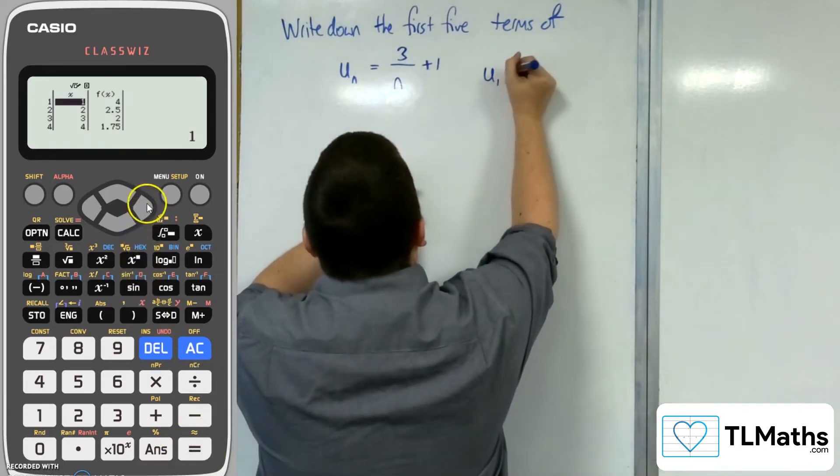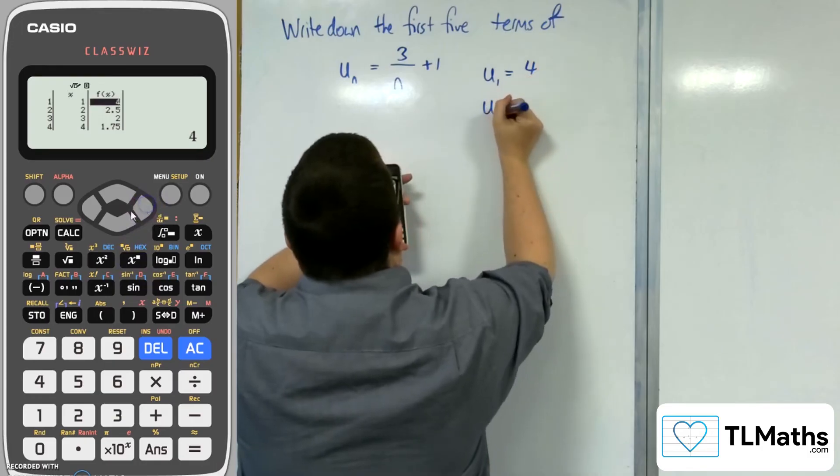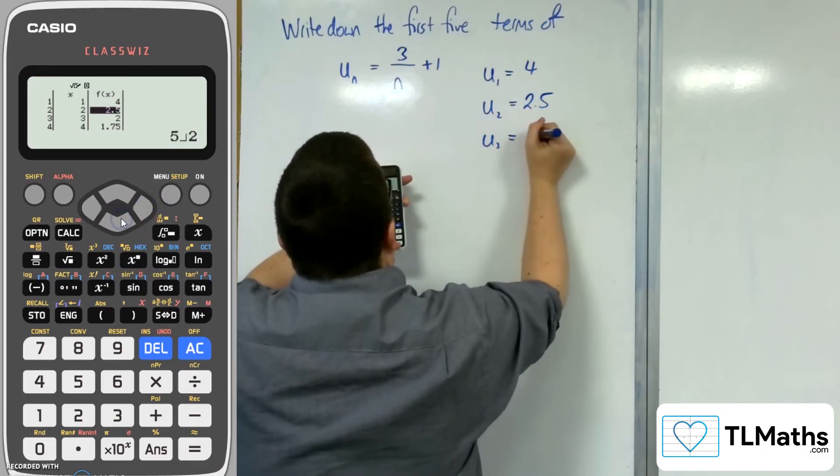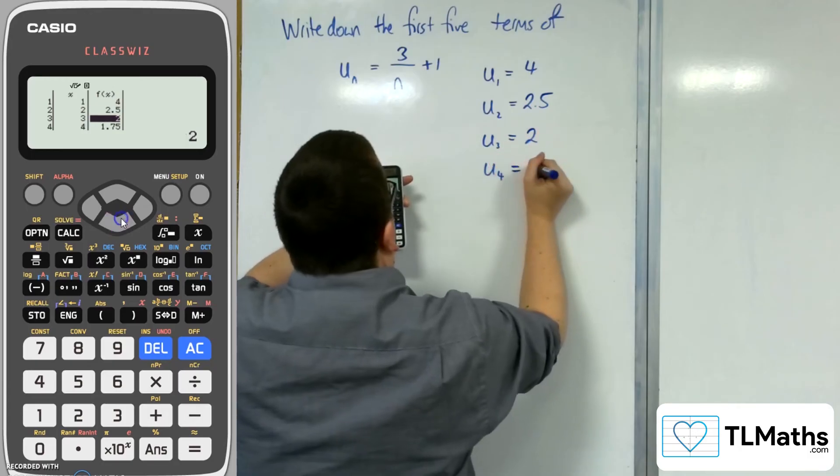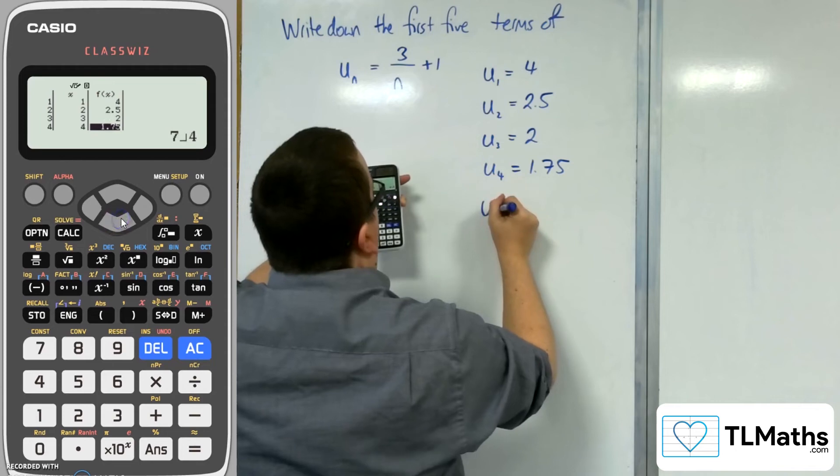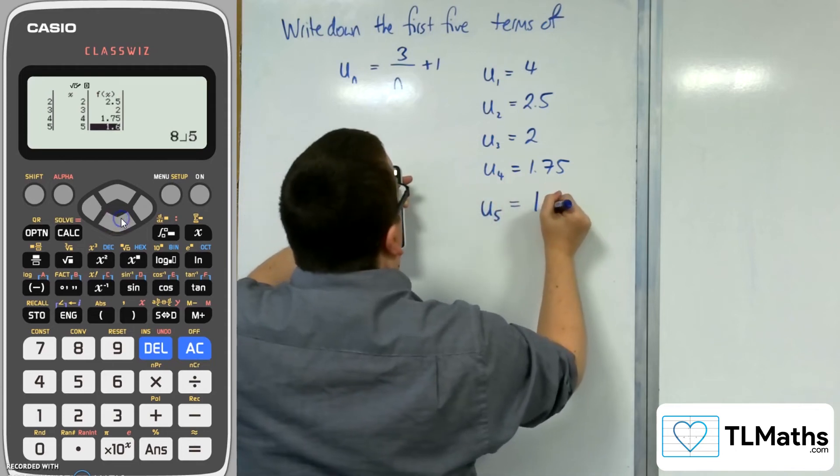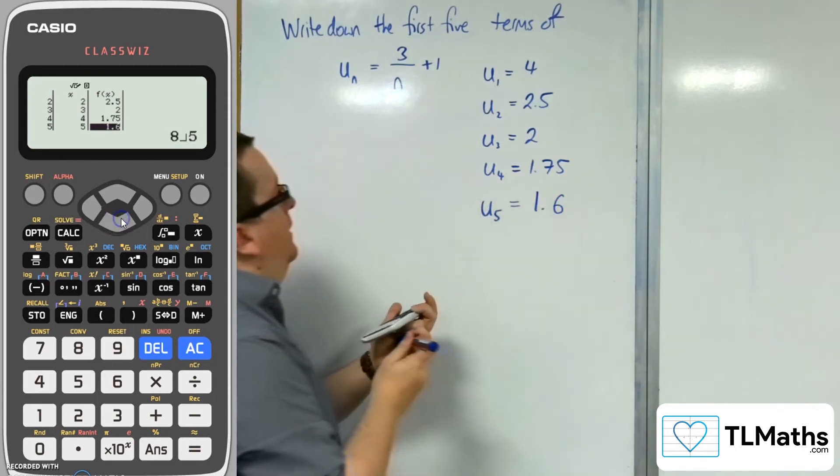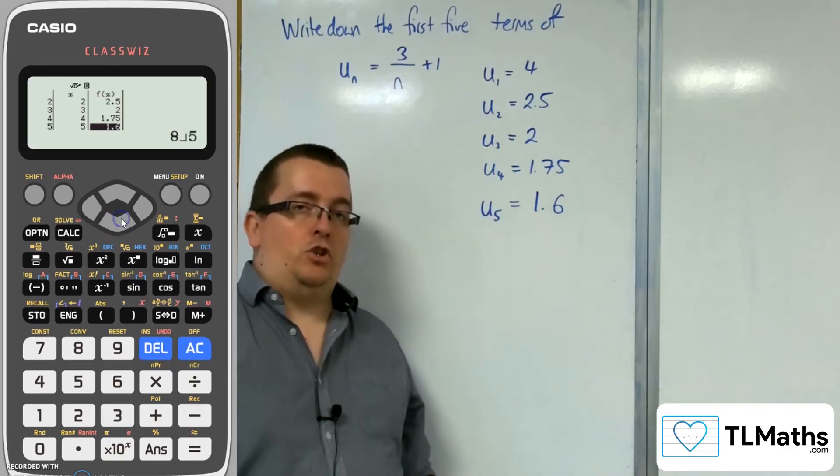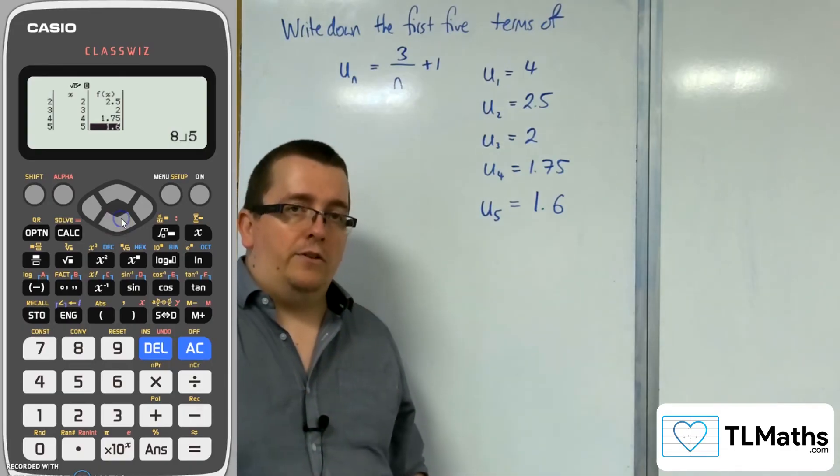So I get u₁ is 4, u₂ is 2.5, u₃ is 2, u₄ is 1.75, and scrolling down, u₅ is 1.6. So I've got the first five terms very easily without having to actually type the values into my calculator.